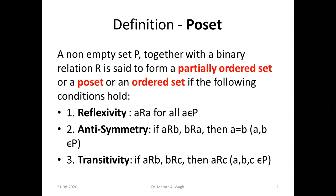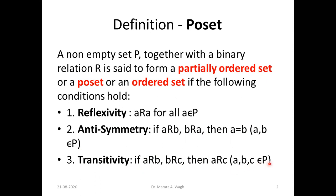With respect to that relation, the set will form a partially ordered set if it satisfies these three properties. First is reflexivity — reflexivity means every element is related to itself, so a is related to a for all a in P. Second is anti-symmetry — if a is related to b and b is related to a, then a equals b, where a and b are in P. Third is transitivity — if a is related to b and b is related to c, then a is related to c, where a, b, c are in P.